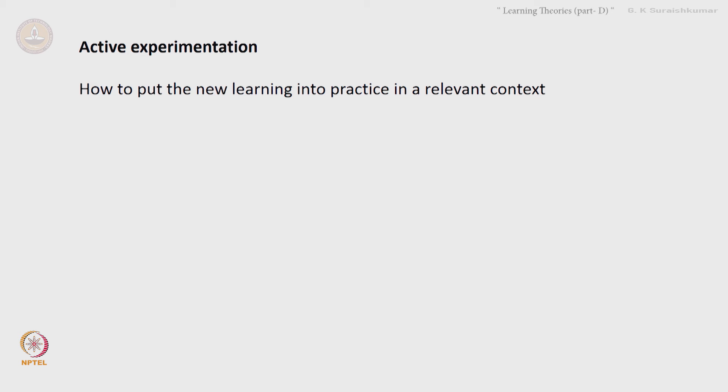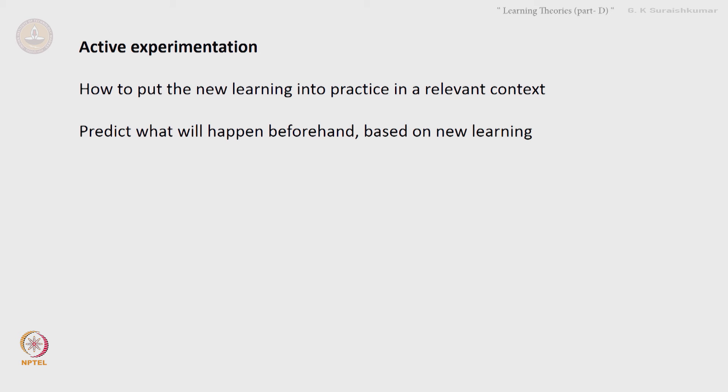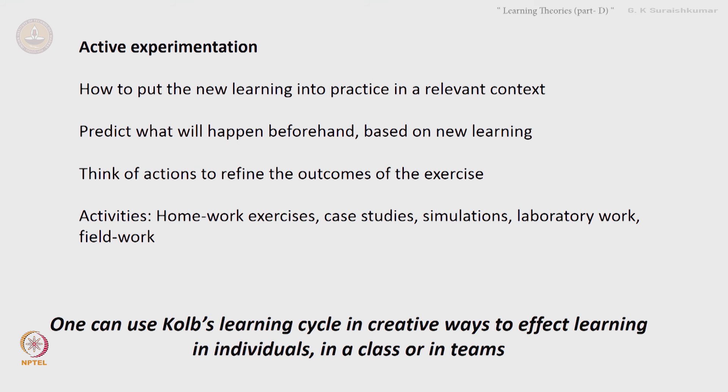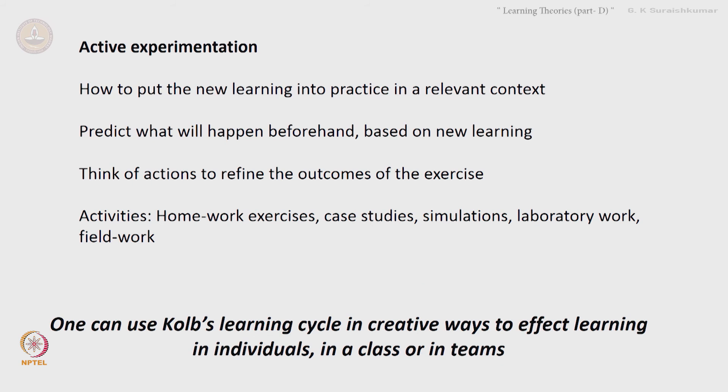The final step is active experimentation — how to put new learning into practice in a relevant context. Predict what will happen beforehand based on new learning, and think of actions to refine the outcomes. Activities could include homework exercises, case studies, simulations, laboratory work, and field work. Once the learning is set, go back and immerse yourself, completing the learning cycle. This is how learning could happen according to Kolb, and one can use this cycle in creative ways to affect learning in individuals or teams.